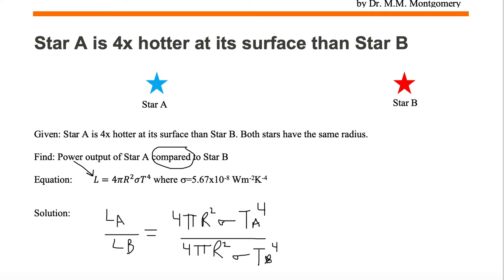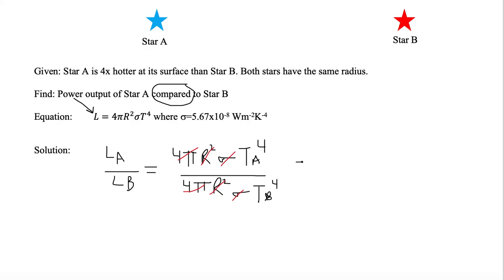Let's eliminate like variables. We've got 4π and 4π. We've got R² and R². The only thing we're left with is temperature A to the fourth and temperature B to the fourth.